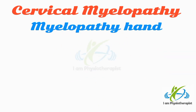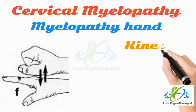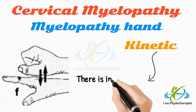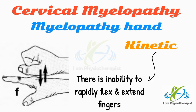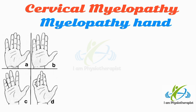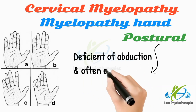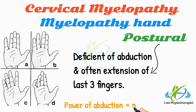Myelopathy hand has two components. First, kinetic: there is inability to rapidly flex and extend the fingers. A normal person can flex and extend the fingers more than 20 times in 10 seconds. The second component is postural: there is deficient abduction and often extension of the last three fingers. The power of abduction is normal, distinguishing it from ulnar nerve palsy.